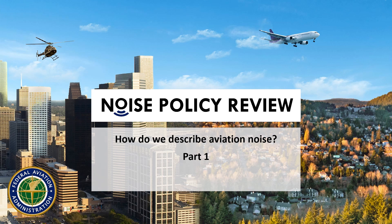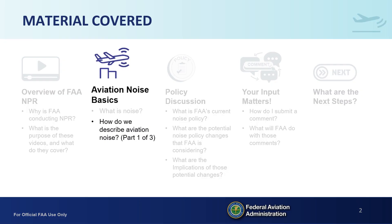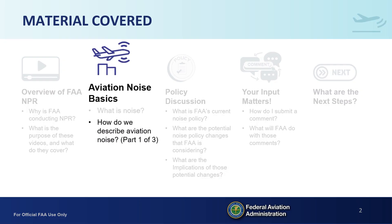This is a short video about the Federal Aviation Administration's Noise Policy Review. It is the first in a series which explains how we describe aviation noise. Black text signifies what is being conveyed by this video, while gray text signifies what is covered in other videos in the series. This video covers the concept of what a noise metric is, types of noise metrics, and single event metrics.